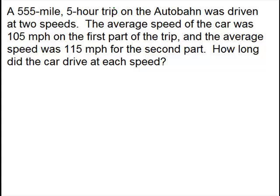A 555-mile, five-hour trip on the Autobahn was driven at two speeds. The average speed of the car was 105 miles per hour on the first part of the trip, and the average speed was 115 miles per hour for the second part. How long did the car drive at each speed?